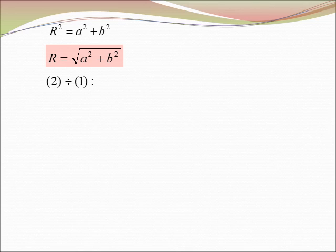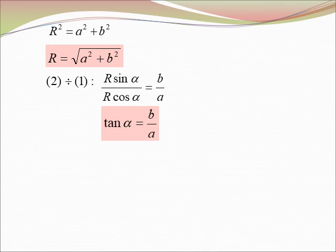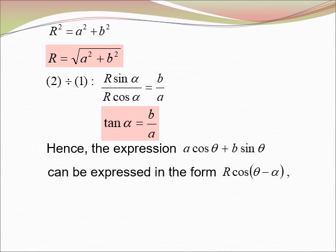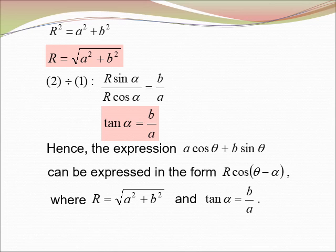Dividing the second equation by the first equation, we get R sin α over R cos α equals B over A. Simplifying sin over cos gives tangent, so tan α = B/A. Therefore the expression A cos θ + B sin θ can be expressed in the form R cos(θ − α), where R = √(A² + B²) and tan α = B/A.